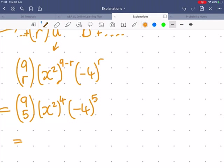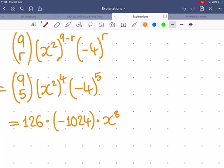And now you can simply do your calculation. 9 choose 5 is 126. Minus 4 to the power of 5 is negative 1024. And x squared to the power of 4 is x to the power of 8, as we desired. Final calculation gives us negative 129,024 x to the power of 8.